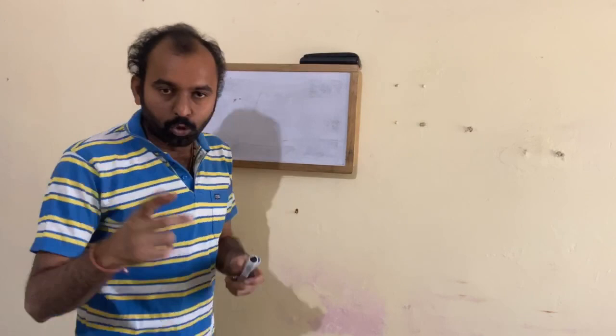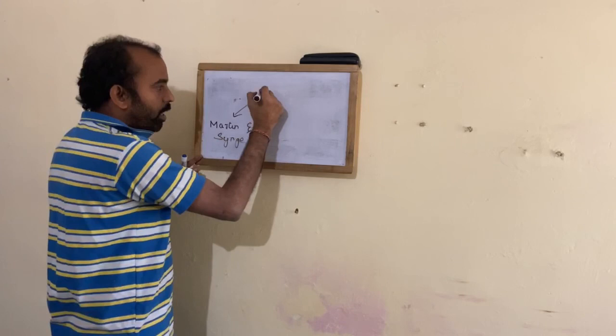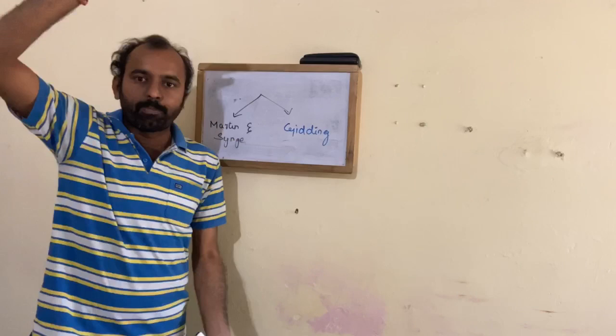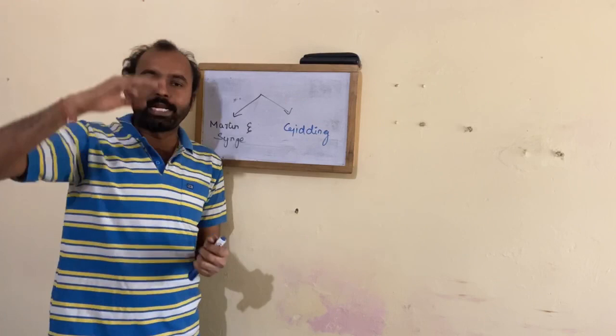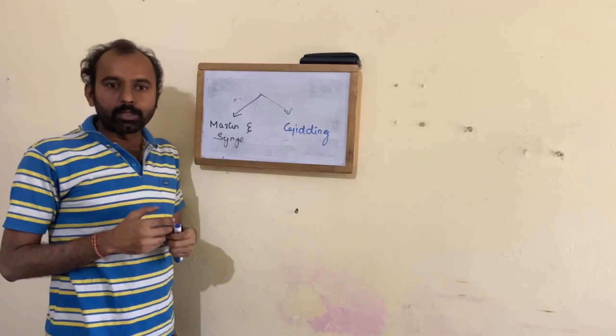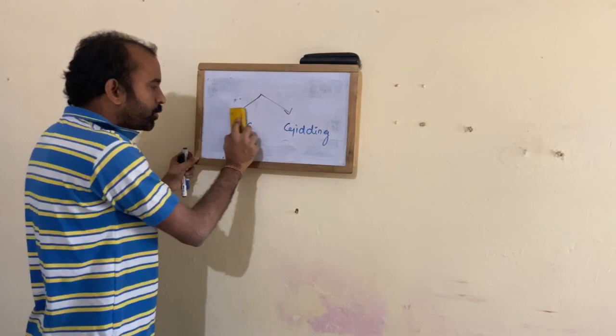The classical definition of the chromatographic system was given by two groups: Martin and Synge, and the Giddings group. According to Martin and Synge, the entire chromatographic process is divided into a number of plates — more plates means more resolution. Giddings suggested that the chromatographic system depends upon rate theory. These form the fundamental theories of chromatography.